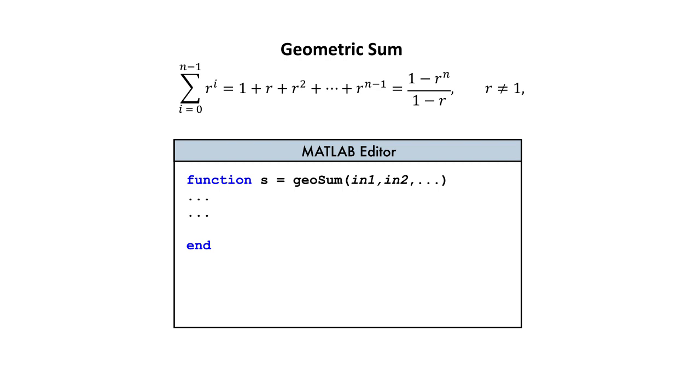To complete the declaration, we'll provide the list of input variables needed to compute a geometric sum. The common ratio, r, and the number of terms to sum, n.